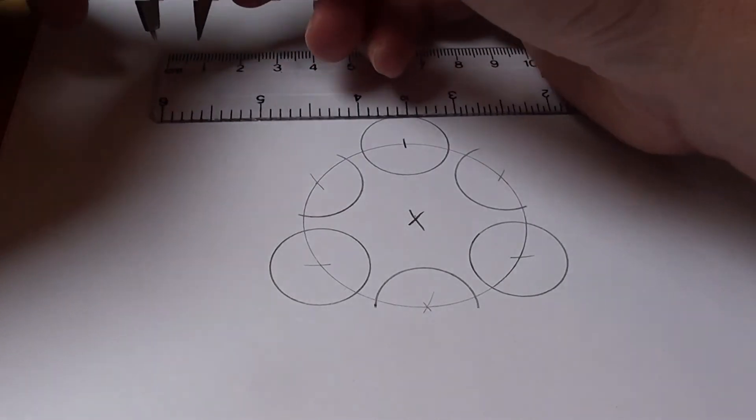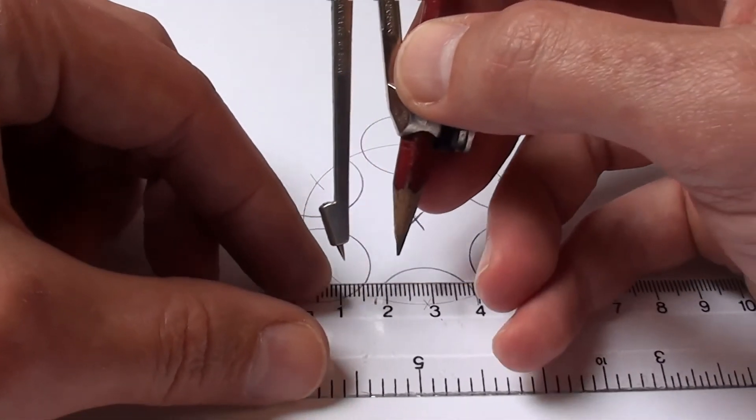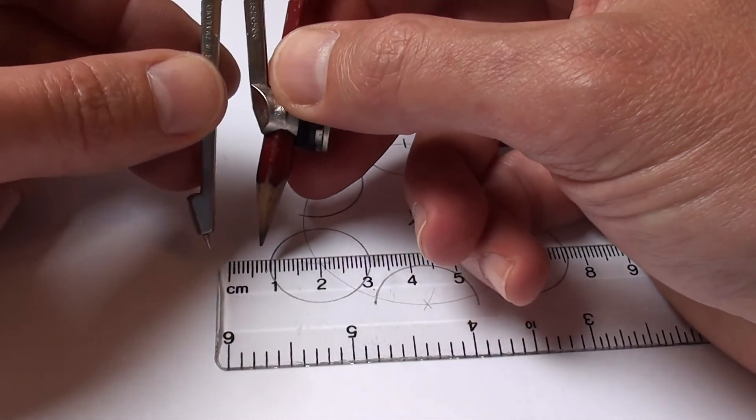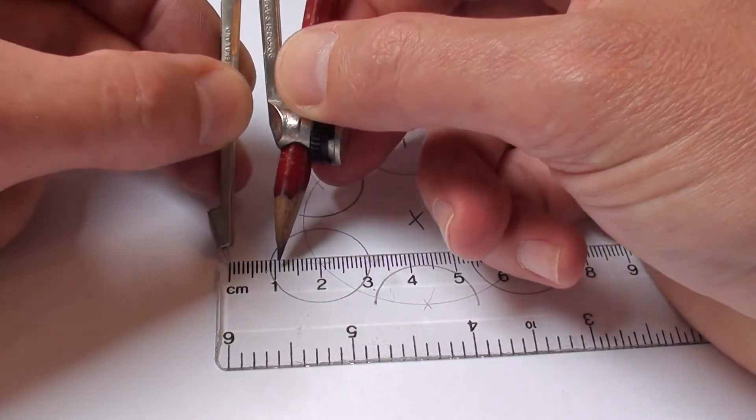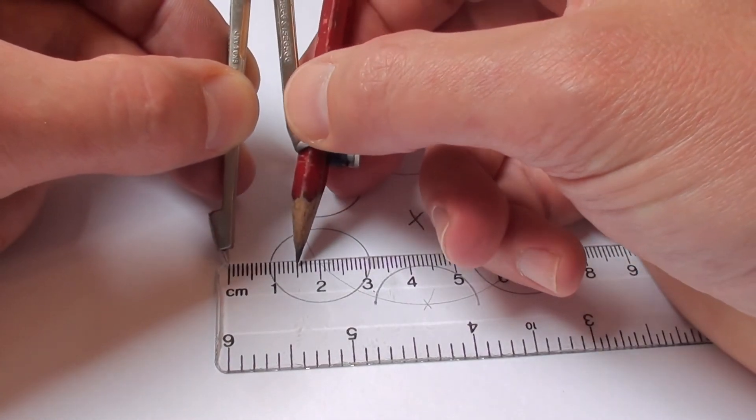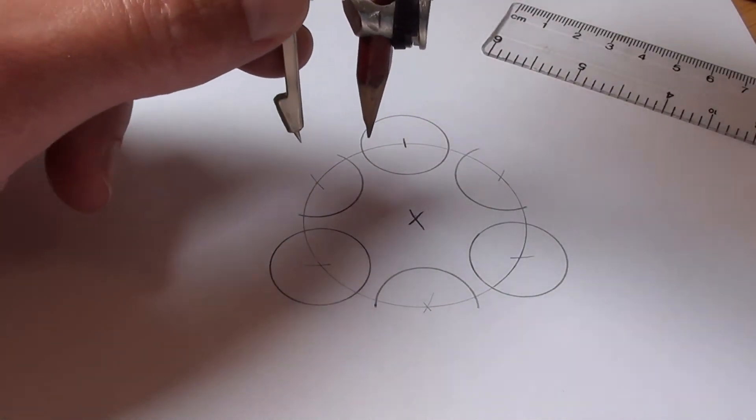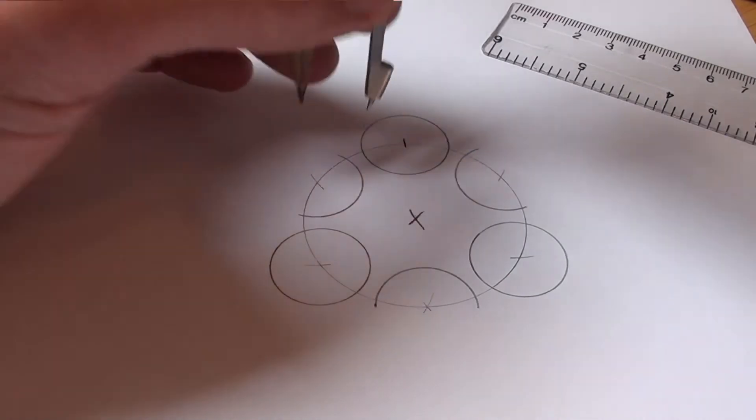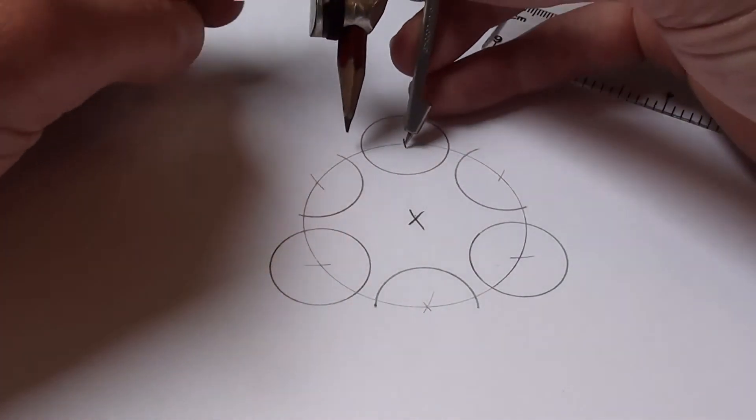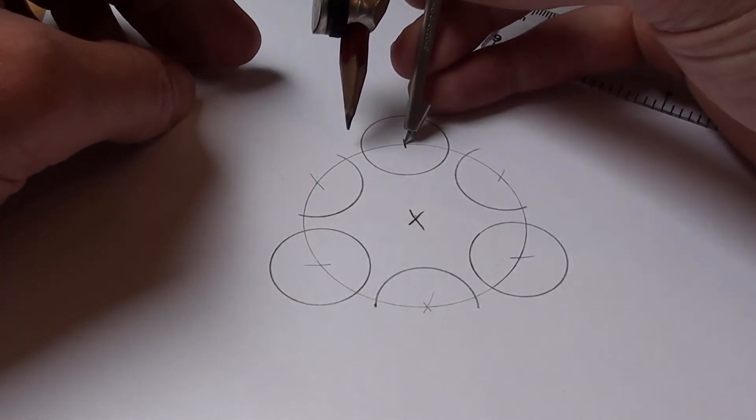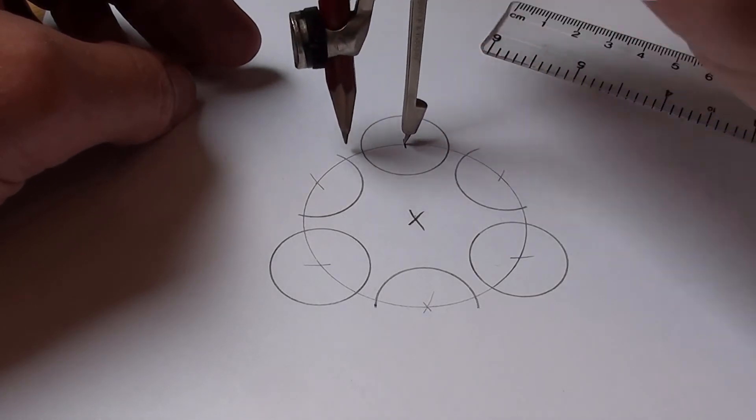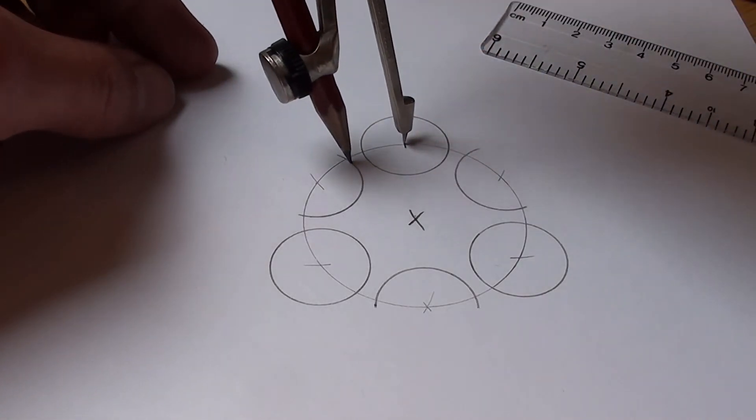The last dimension you want to set on your compass is 15mm. So again, start at the 0, move the pencil out to 15. And now starting from the first three circles that you drew, using those centres again, connect up these lines.